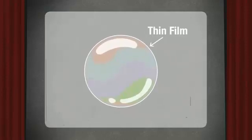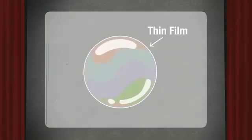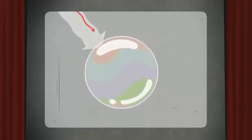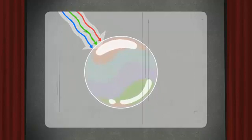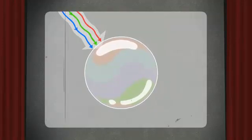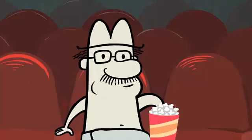A soap bubble is a thin film, but its thickness varies across the surface. Because light is made up of red, green, and blue light waves, different amounts of each color are reflected off the surface. Let's find out why.